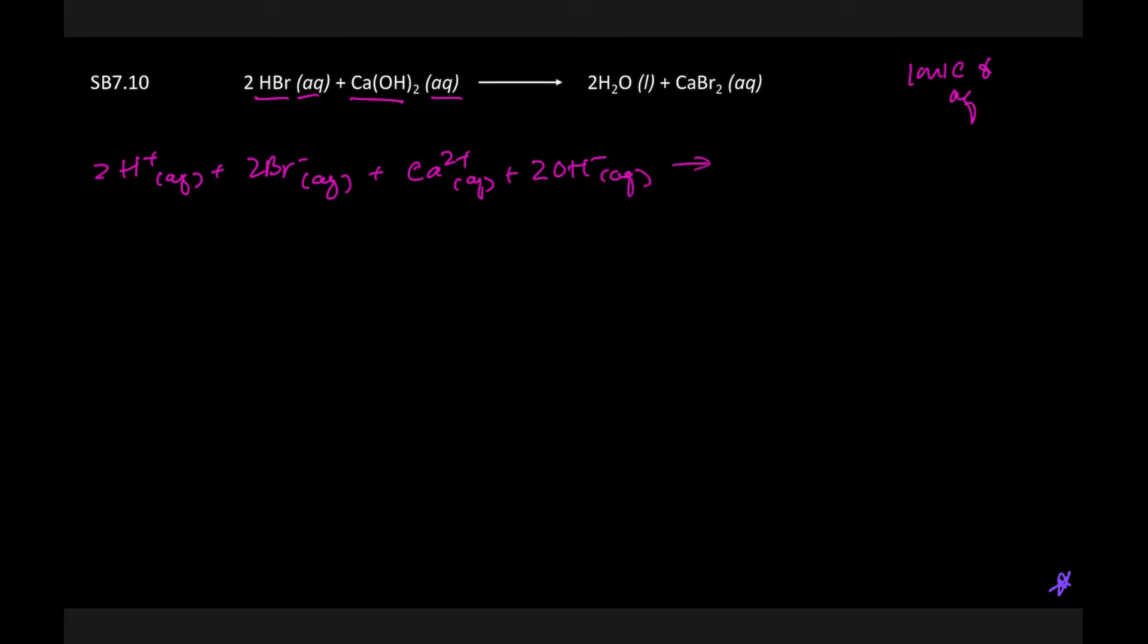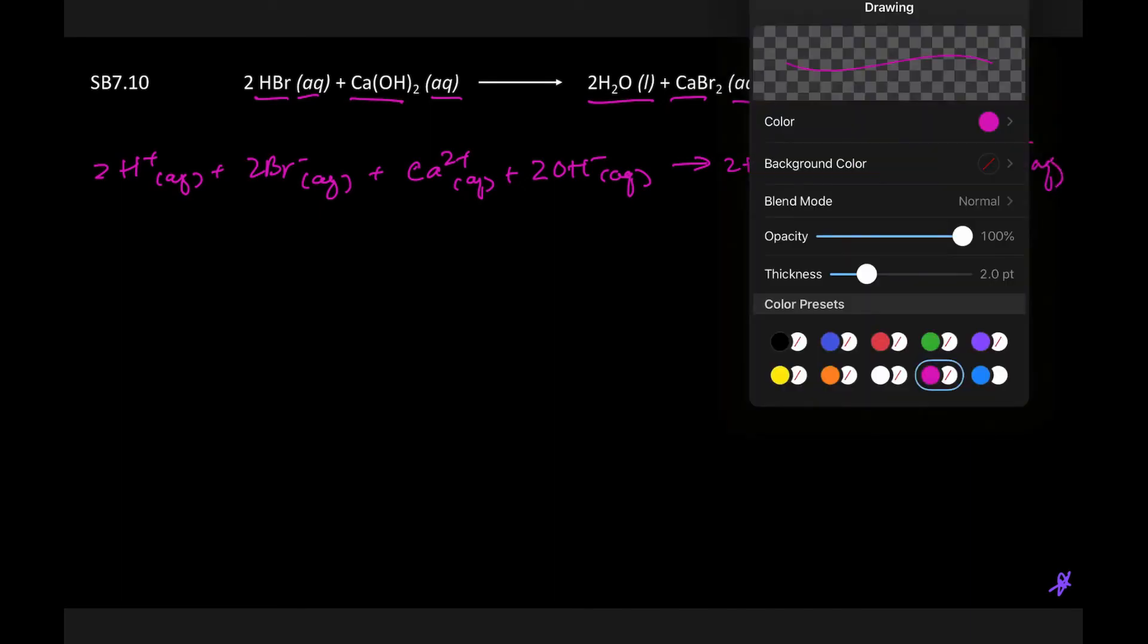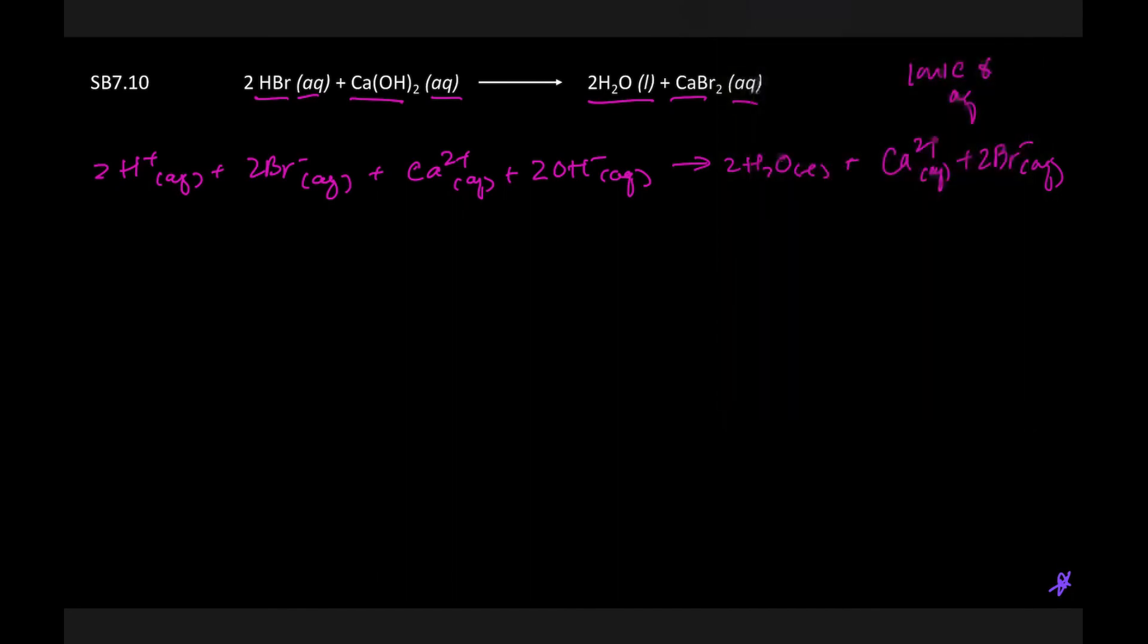We have ionic aqueous, so we have calcium two plus aqueous and two hydroxide ions aqueous. And then on my product side, it says that I have water, which is a liquid. So water, not ionic. It's also not aqueous. So it doesn't meet the criteria. So we're just going to write that as it is. And here we have ionic and aqueous. So ionic means CA two plus and two BR minus aqueous. Now, just like last time, we'll go through and cancel the things that are exactly the same on both sides. Those are the same on both sides. These are the same on both sides, which means that this becomes my net.